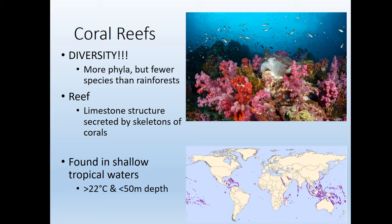Coral reefs are the next habitat — really a story of diversity, but in a different way. Coral reefs are extremely diverse when we think about phyla. Tropical rainforests have more species overall, but it's really just insects and plants. Coral reefs, by contrast, have sponges, cnidarians, mollusks, arthropods, chordates, echinoderms, worms — everything. The reef itself is a limestone structure secreted by the corals, which are essentially tiny jellyfish encapsulated in a calcium carbonate shell.